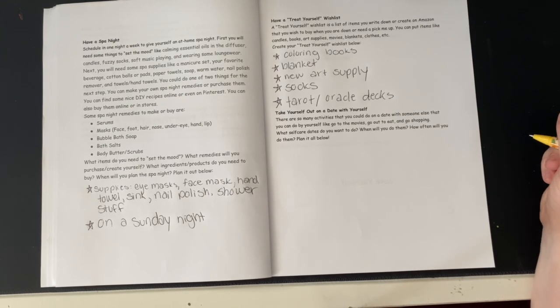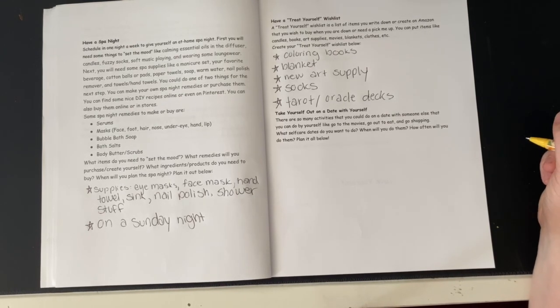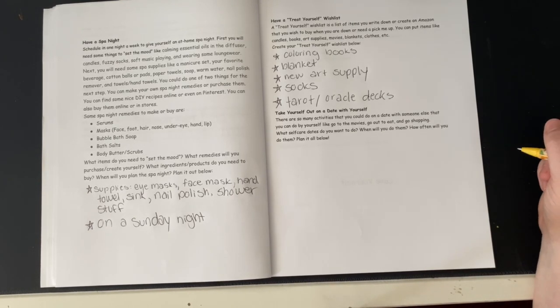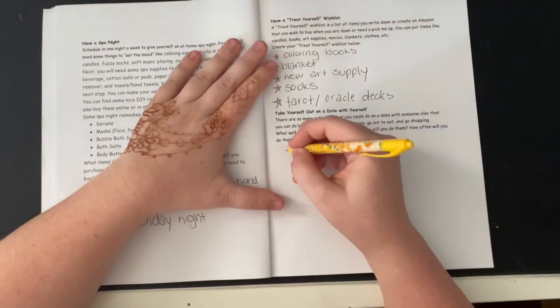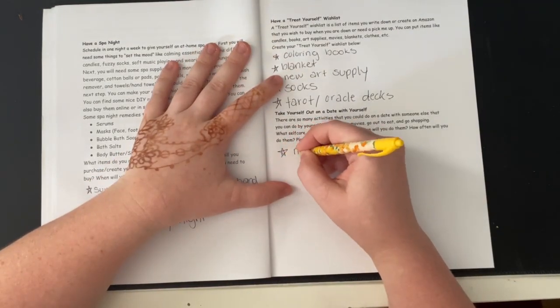Take yourself out on a date with yourself. There are so many activities that you could do on a date with someone else that you could do by yourself, like go to the movies, go out to eat, and go shopping. What self-care dates do you want to do? When will you do them? How often will you do them? Plan it all below.